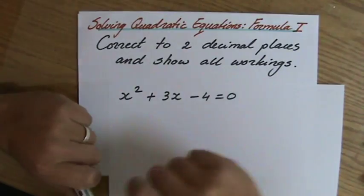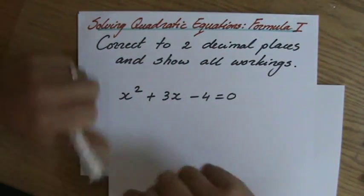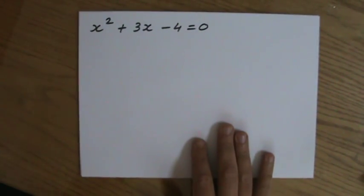We have to correct it to two decimal places and show all workings, and I already suggest that you cannot factorize it. x squared plus 3x minus 4, and that has to equal 0.